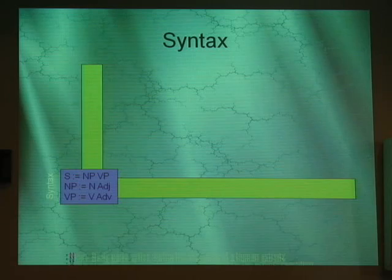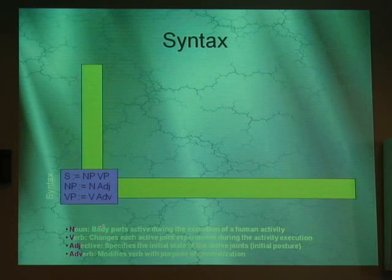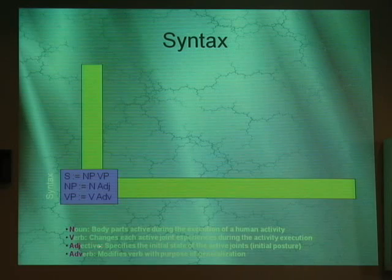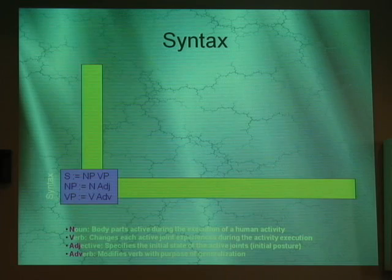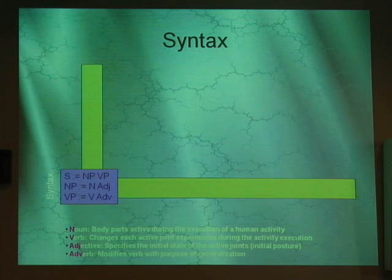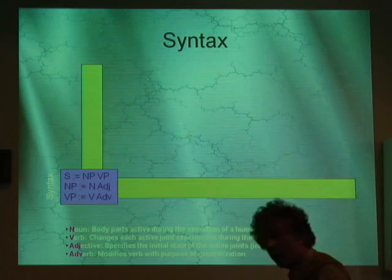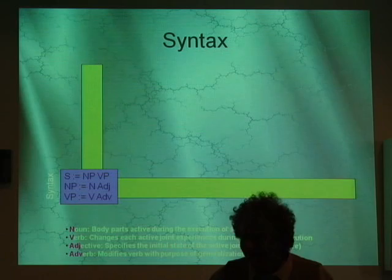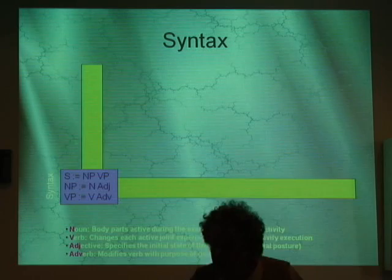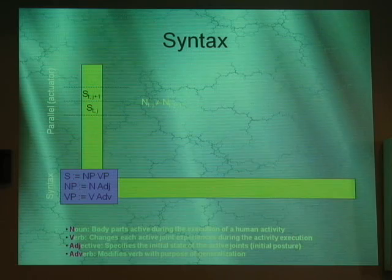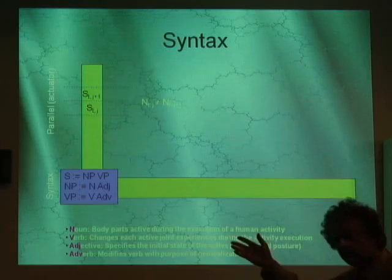In terms of syntax: a noun is either a body part or an object; a verb is the action; an adjective, which modifies a noun, is a posture — this is one adjective for my hand, this is another. Adverbs are the most interesting: they modify the verbs. So I can walk, I can walk a sad walk, I can walk a happy walk. All these different characteristics, the specifics, are adverbial information.